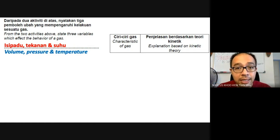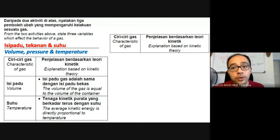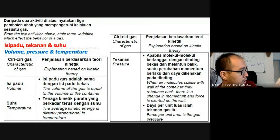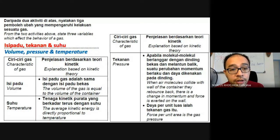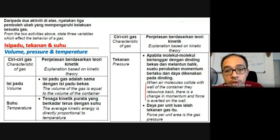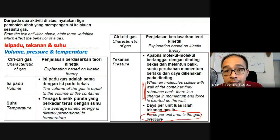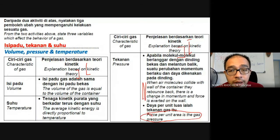This whole subtopic is about studying the relationships between these three and how they affect gas behavior. Based on the kinetic theory: the volume of gas equals the volume of the container; the average kinetic energy of gas molecules is directly proportional to temperature; and when air molecules collide with the wall of the container, they rebound — there is a change in momentum and force, so force per unit area is the gas pressure.